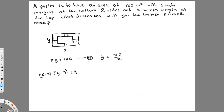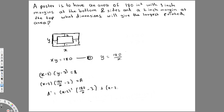Now I substitute y = 180/x, so A = (x − 2)(180/x − 3). To find the derivative, I'll use the product rule since we have two different expressions multiplied together. So A' = (x − 2)' · (180/x − 3) + (x − 2) · (180/x − 3)'.